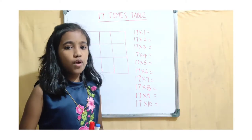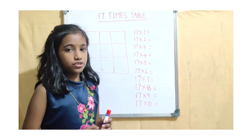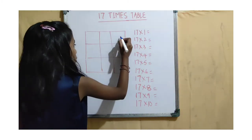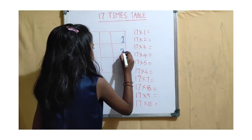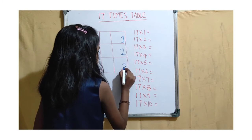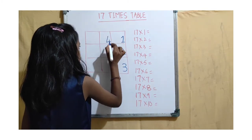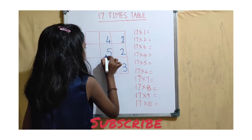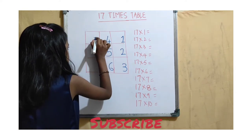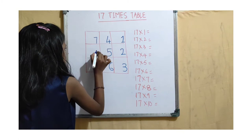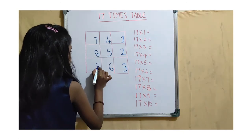First we have to write 1 to 9 in ascending order: 1, 2, 3, 4, 5, 6, 7, 8, 9.